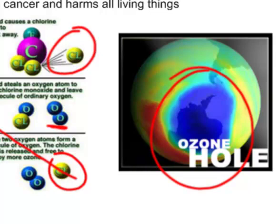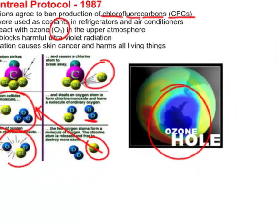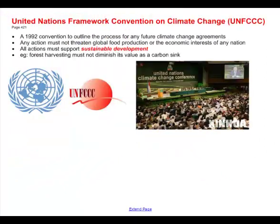So we had an agreement in 1987 to ban production of CFCs. They've replaced all of these chemicals in our refrigerators and air conditioners. The idea is let's not make the bad situation worse by adding any more to the atmosphere.